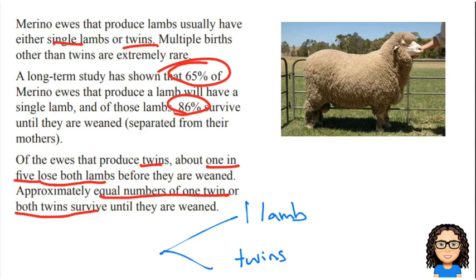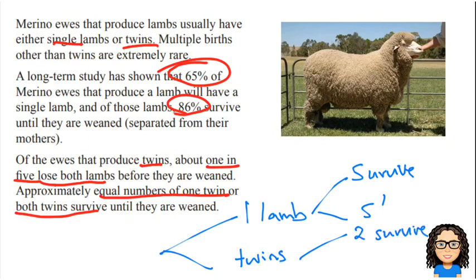The next layer of our tree looks at whether these lambs survive until they're weaned. So we've got whether they survive or whether they don't survive. And if it's twins, we talk about whether two twins survive, whether only one survives, or whether none survive. So there's our layout of our tree — that's what we want to build.